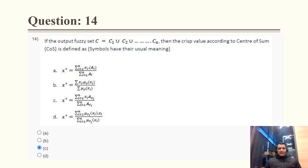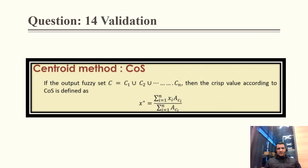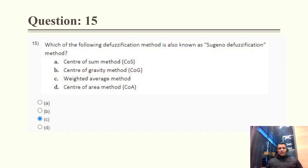Question 14: If the output fuzzy set is C, the crisp value according to the center of sum method is given by a specific formula. Option C is the correct one. A snapshot cross-validates this formula.